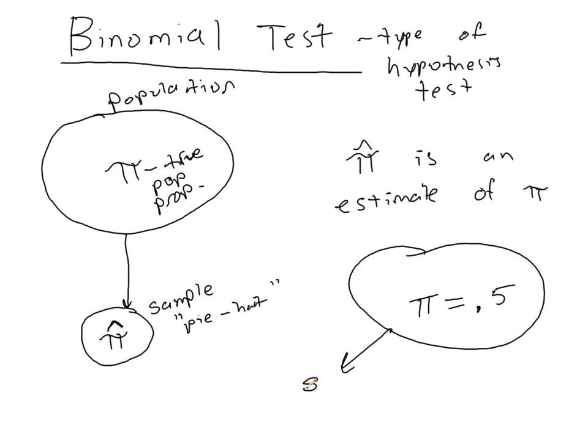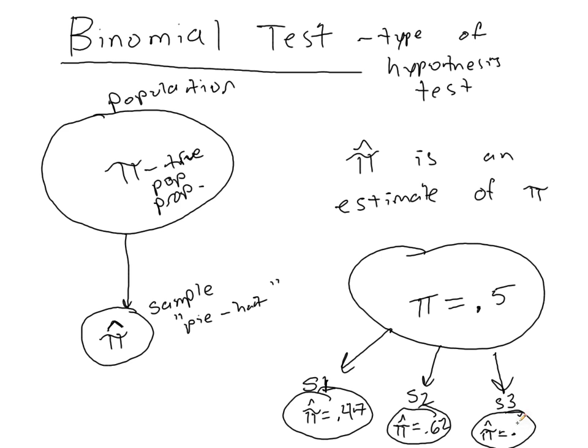Well, in sample one, you might get an estimator or an estimate of 0.47, which is slightly below, because you're drawing from a random sample. Now, yes, it's truly representative, but you get sampling variability. So maybe in a different sample that you collected, you found that pi hat is equal to 0.62. And maybe in yet another sample, you'd find that pi hat is equal to 0.4.